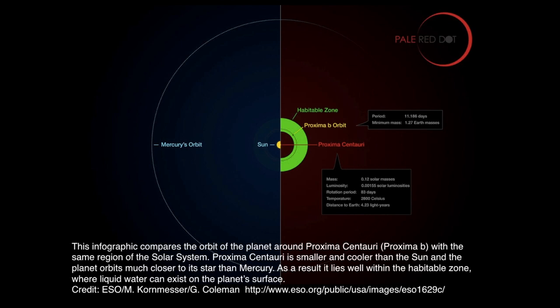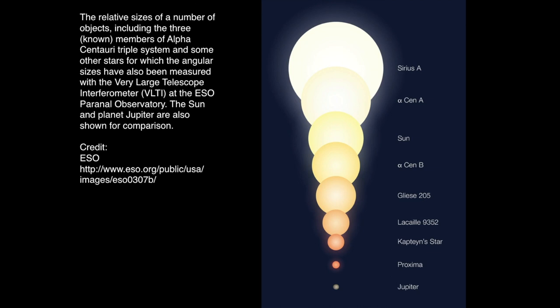One reason for studying Proxima Centauri is the Starshot project — people want to send a small spacecraft there. Comparing familiar star sizes, Proxima is actually a really small star — only a little bigger than Jupiter, but still a star because it undergoes fusion. If you were standing on Proxima b, the star would look much, much larger in the sky than our Sun does from Earth. You couldn't even cover it with your thumb held at arm's length — it would take up about half the width of your thumb.